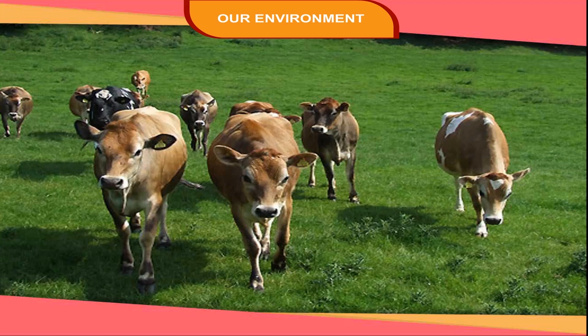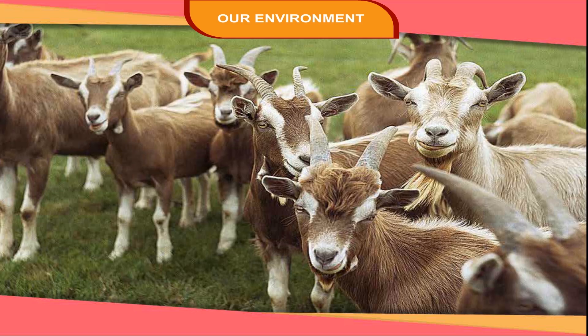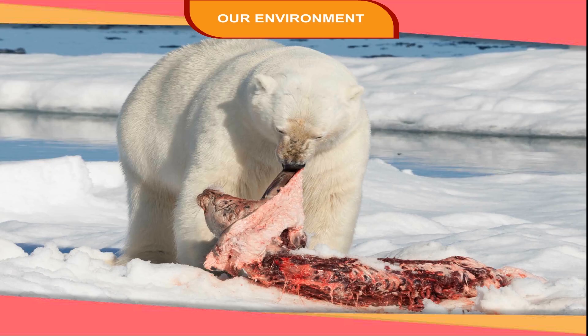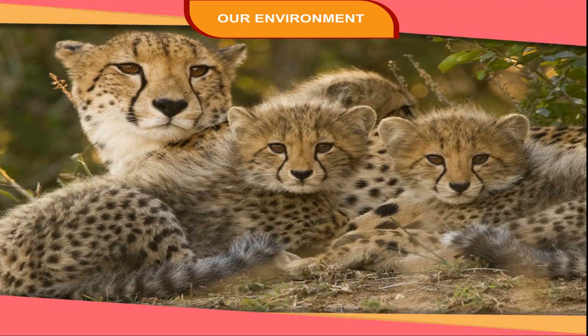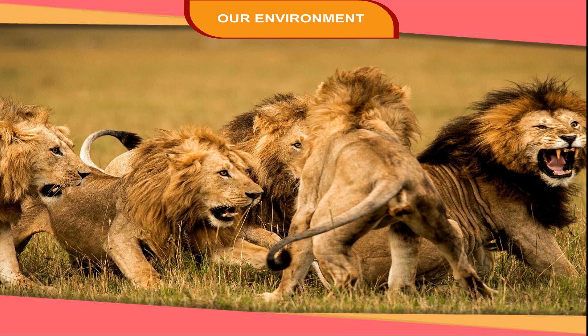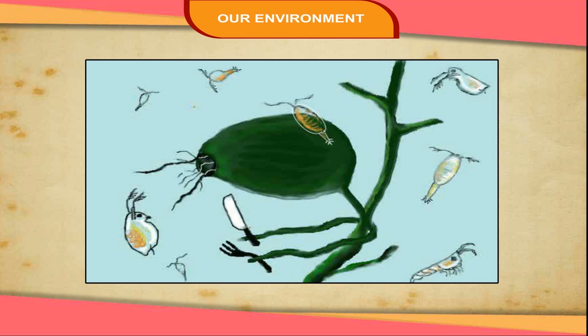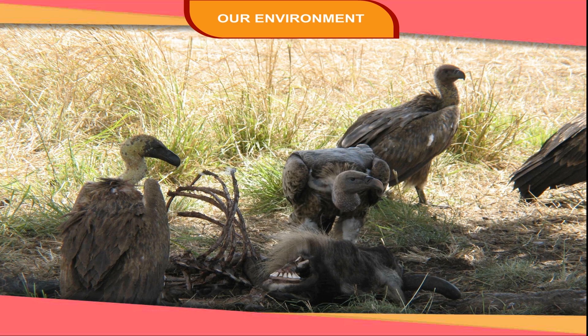The herbivorous are the plant eaters such as cows, goats and other such animals. The carnivorous are the meat eaters like tigers, lions, etc. Omnivorous are those which are both plant as well as flesh eaters, for example, human beings. Another category is decomposers, which feed on dead bodies of plants and animals.